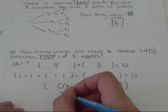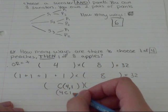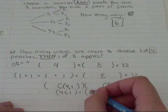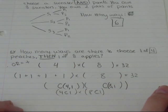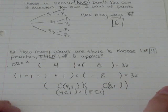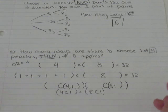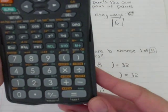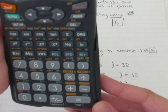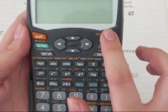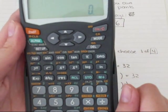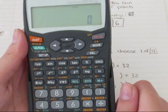I like to write it as four choose one times eight choose one, just because that's the way I think about it. And that's the way I plug it into my calculator. So I guess I'll show you how to do it on your calculator. This is sharp EL531W. And it's a standard math department calculator.